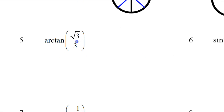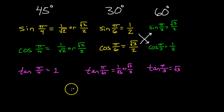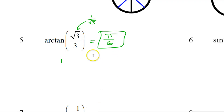Arc tangent of radical 3 over 3 is just an angle — it's the angle whose tangent is radical 3 over 3. By the way, this is the same as 1 over radical 3. What angle has a tangent of 1 over radical 3? This is one we memorized — it is pi over 6. The tangent of pi over 6 is 1 over radical 3, or radical 3 over 3. Nothing fancy on this one — that's just the answer.